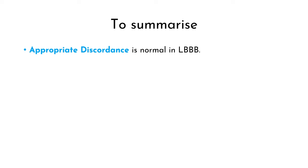Let us quickly summarize the points learned so far. Appropriate discordance is normal in LBBB. If you remember this one point, you can derive the rest of Sgarbossa Criteria. This means that concordance should never be seen in LBBB. So the three ECG findings that should never be seen in LBBB are concordant ST elevation, concordant ST depression, and excessively discordant ST elevation. If any of these are present, it is indicative of an acute MI or occlusion. As you have no doubt guessed, these are the three components of Sgarbossa Criteria.